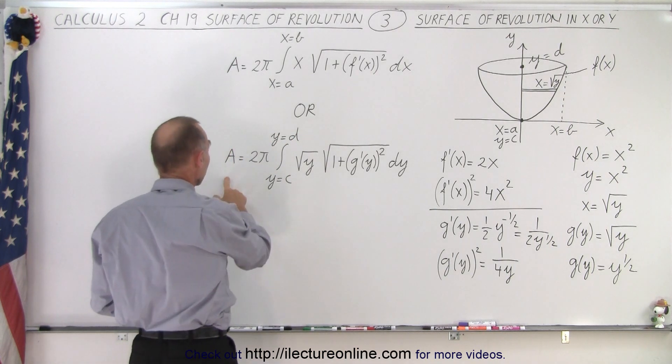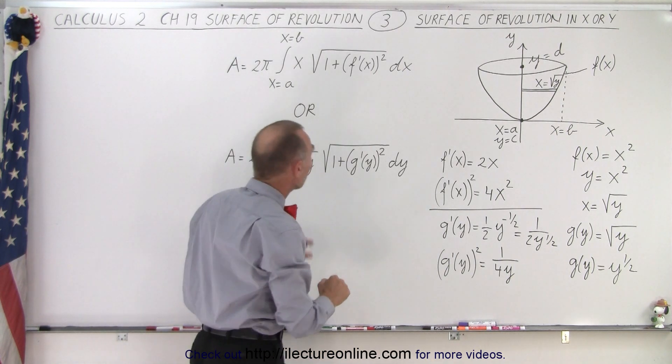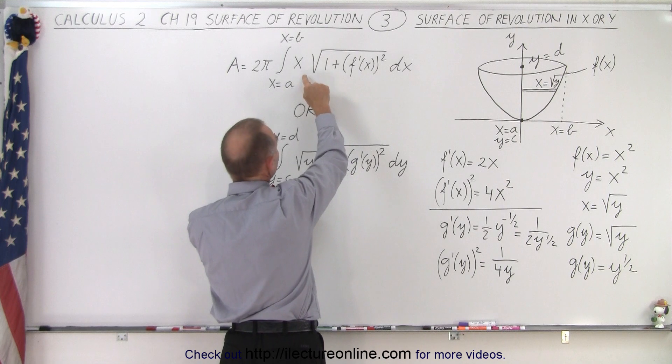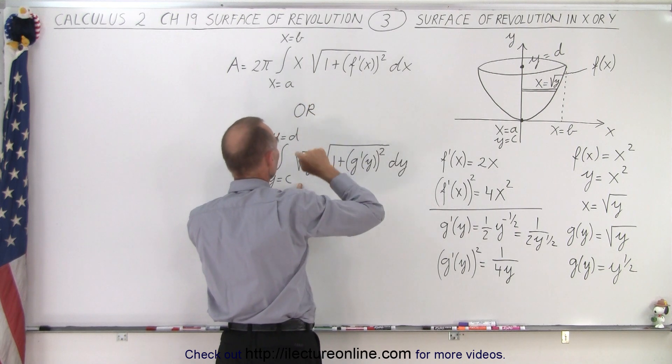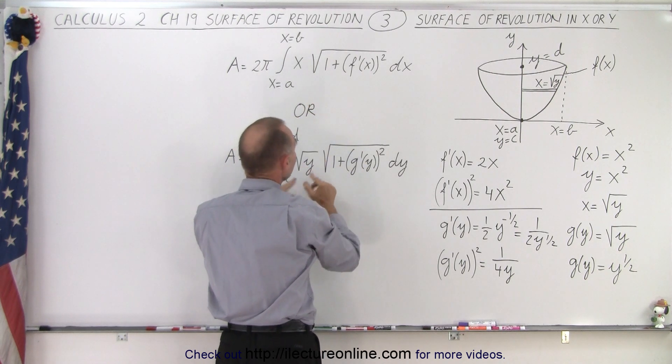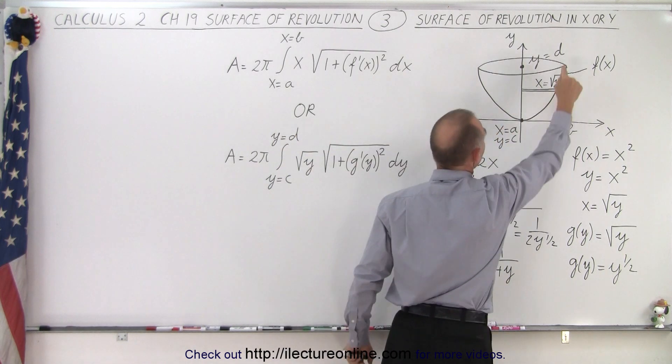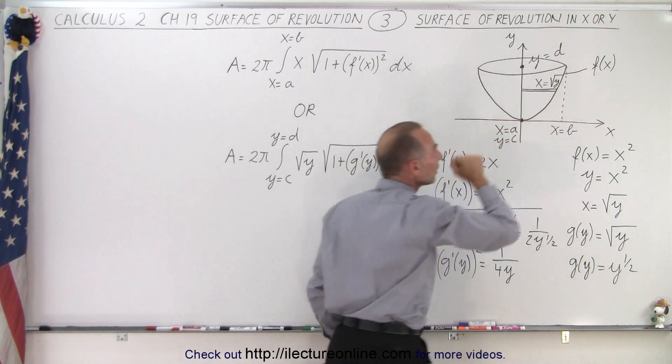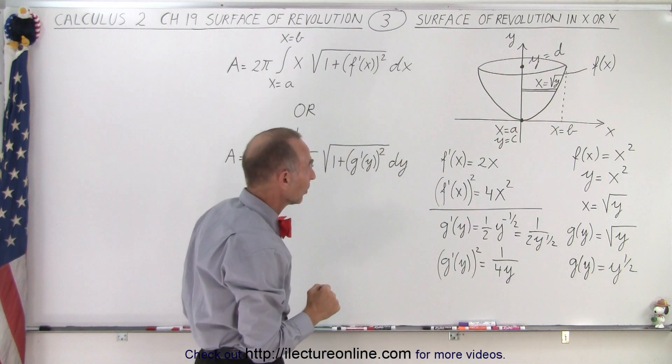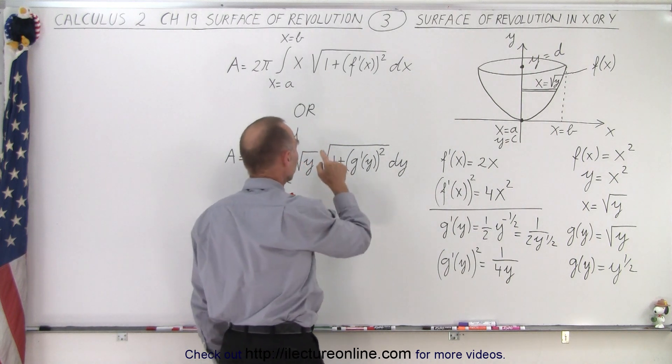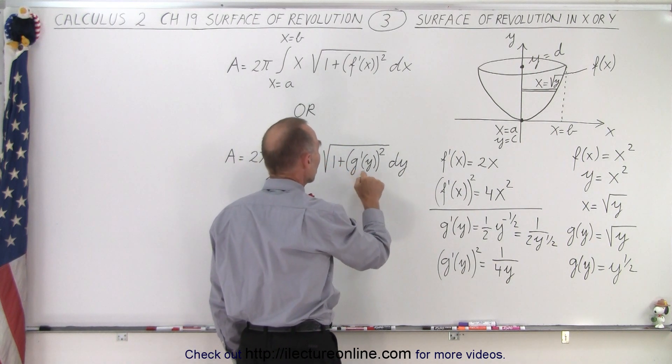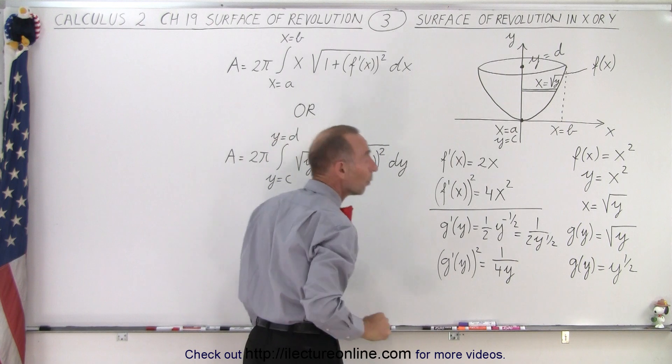Or we could solve it by saying the area is 2π times the radius, but instead of calling the radius x, we're going to call the radius the square root of y. And then of course we're going to take the arc length, but we're going to use the y as the independent variable. And so therefore we use the square root of 1 plus g'(y) squared times dy.